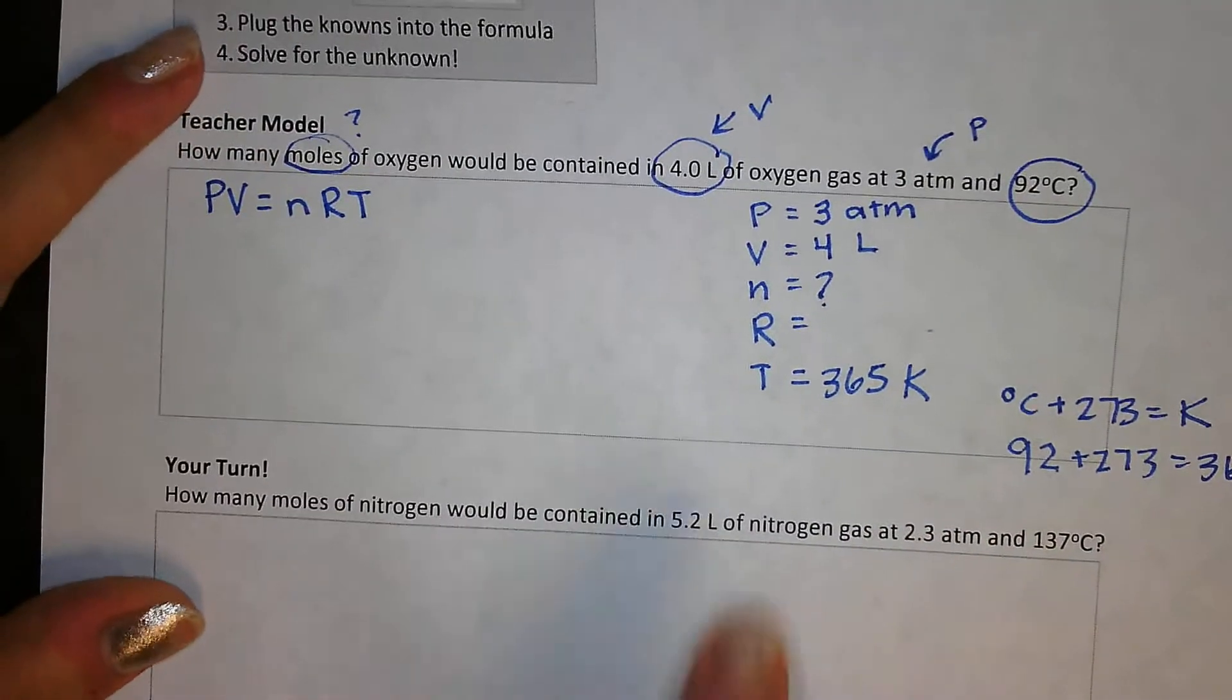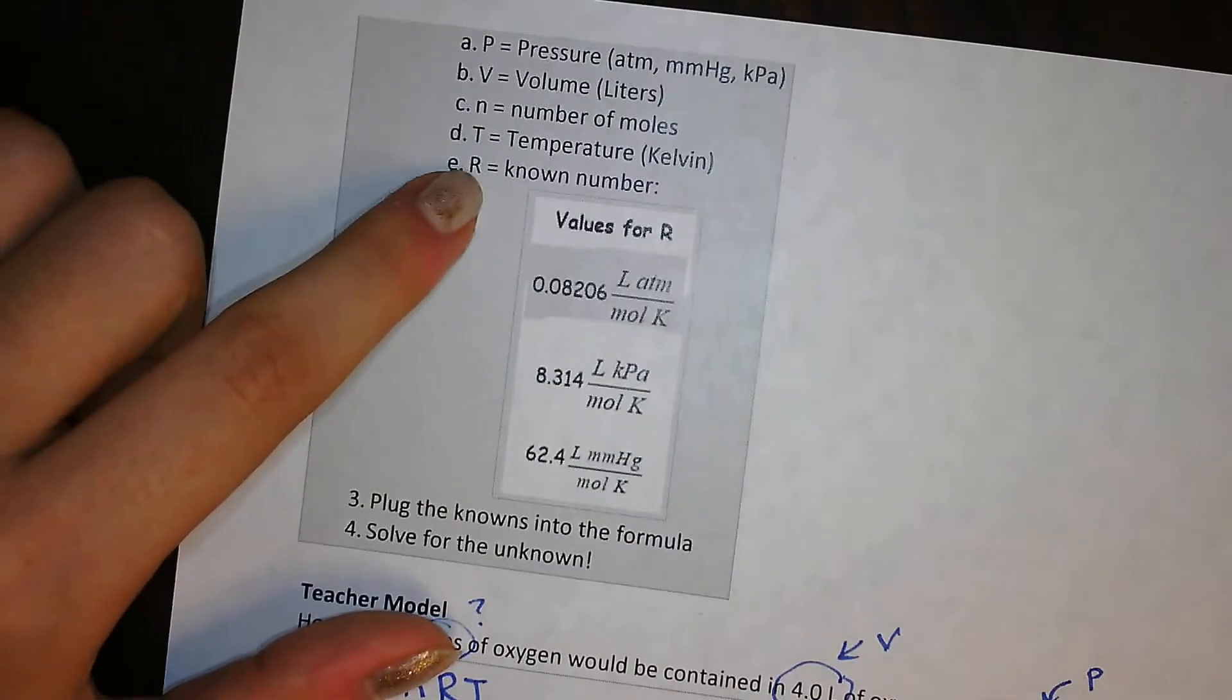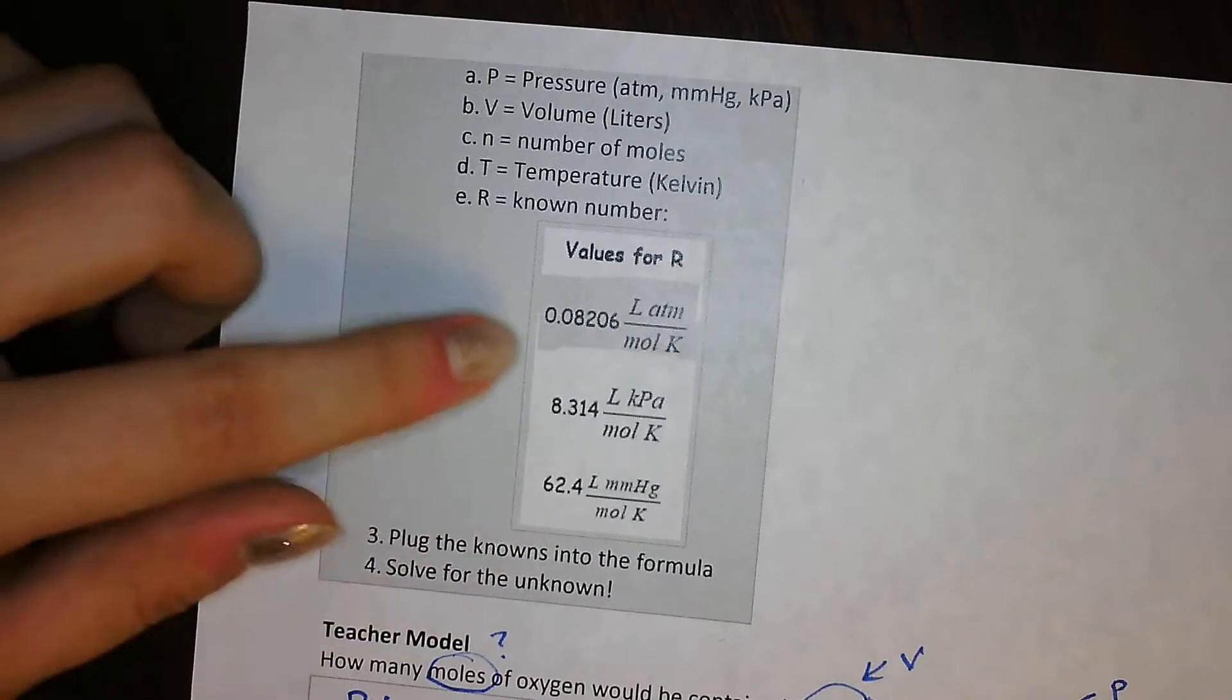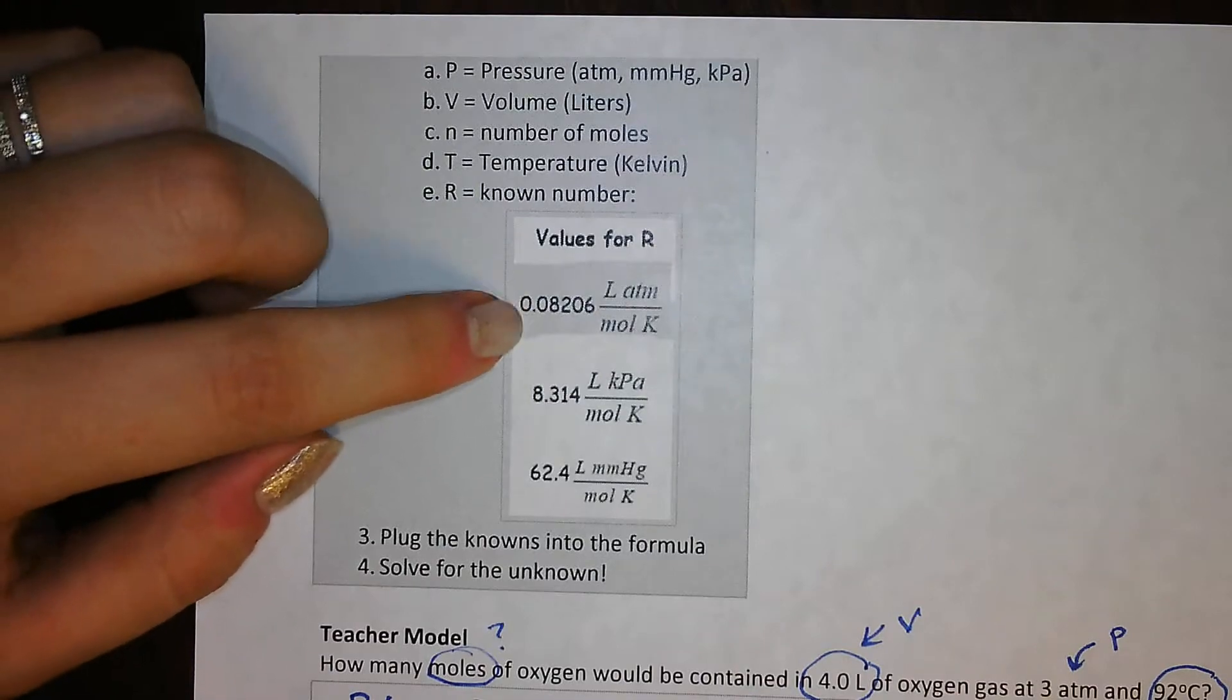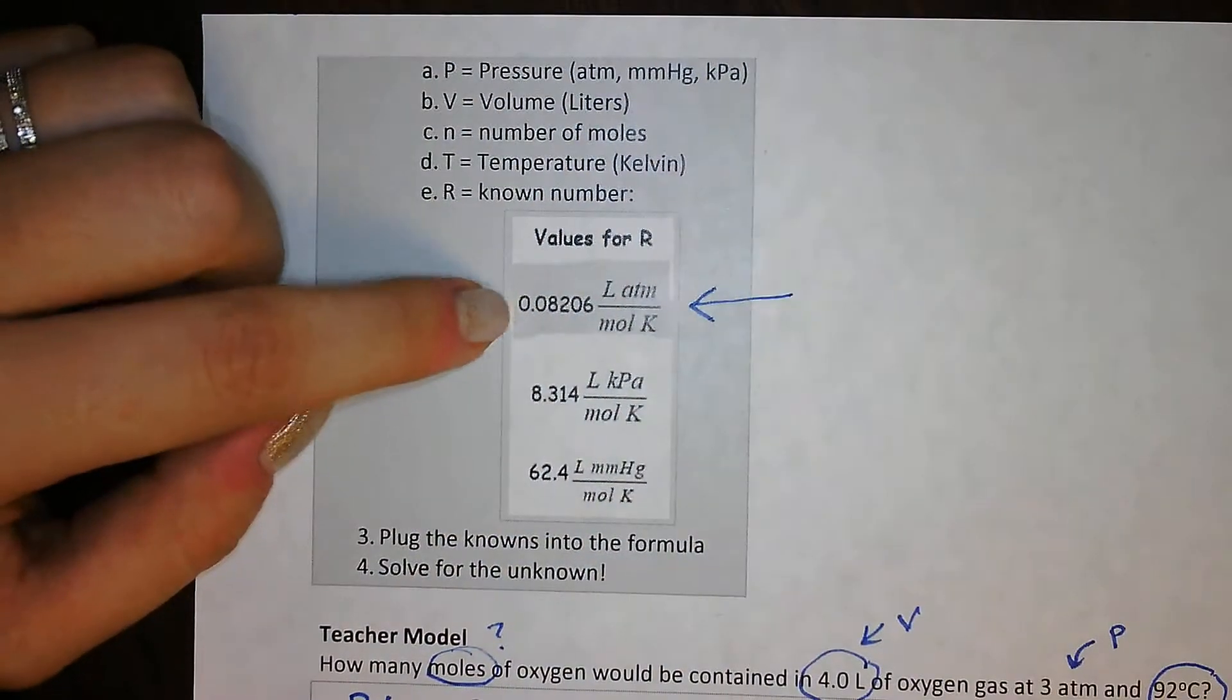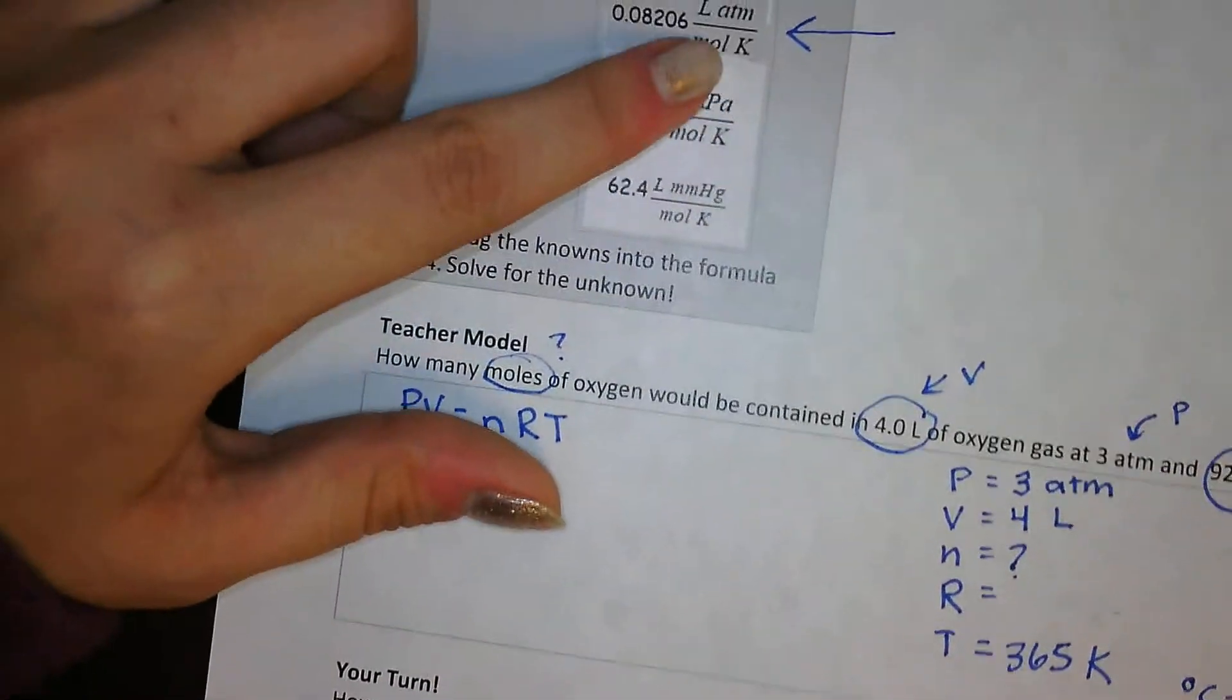And now you may be wondering, okay, well, what about R? R is a known number. It is a gas constant. And it is one of these three options. How you figure out which one it is, is you look at the units. Most of the time, this one is highlighted in your OneNote. Most of the time it's going to be this one. This one is the most common, 0.08206. So let's look at the units.